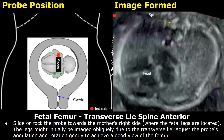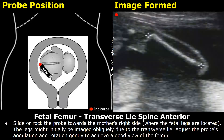This is a transverse lie where the fetal head is towards the mother's left side and the legs are towards the mother's right side. This image is formed at the level of the heart — the probe is in a sagittal orientation but gives a transverse view of the fetus. To find the fetal legs, move the probe towards the mother's right side. The fetal legs might be imaged obliquely due to the transverse lie; adjust the probe's angulation and rotation gently to achieve a good view of the femur.